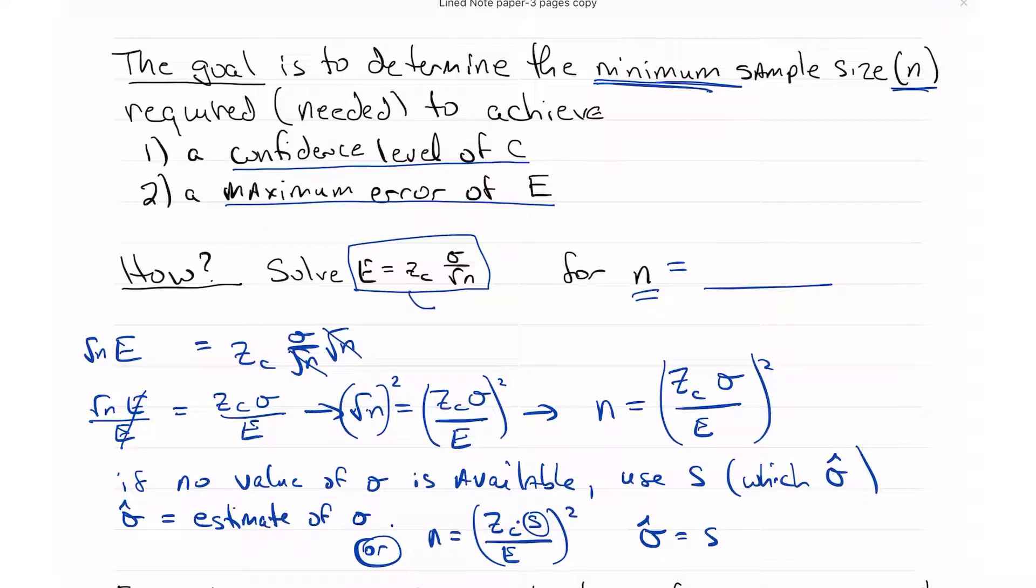So for E, if I plug in 61, so I've got 1.96 and I've got 2, and I divide by the square root of 61, then I get an error that is greater than point five. So I get 1.96 times 2 divided by square root of 61, and that gives me 0.5019, so that's bigger than the maximum E.